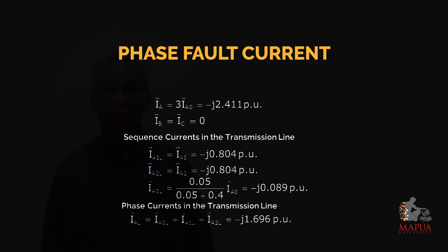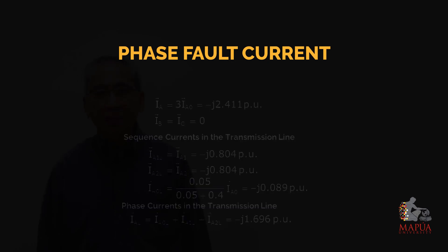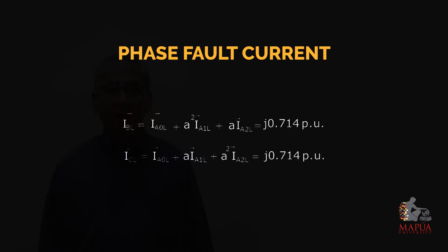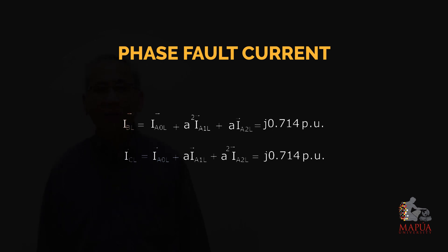Having these sequence currents in the transmission line, we can now solve for the phase currents. IAL = IA0L + IA1L + IA2L = -j1.696 per unit. IBL = IA0L + a²·IA1L + a·IA2L = j0.714 per unit. ICL = IA0L + a·IA1L + a²·IA2L = j0.714 per unit.